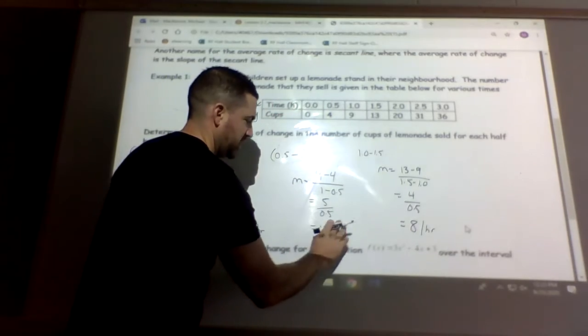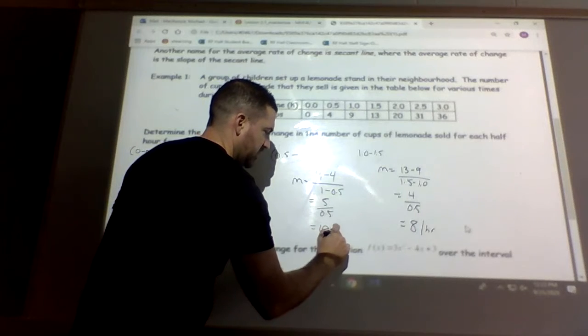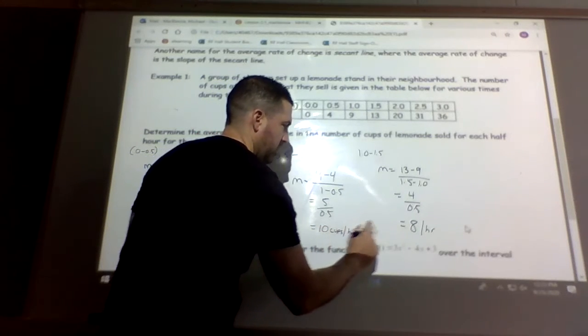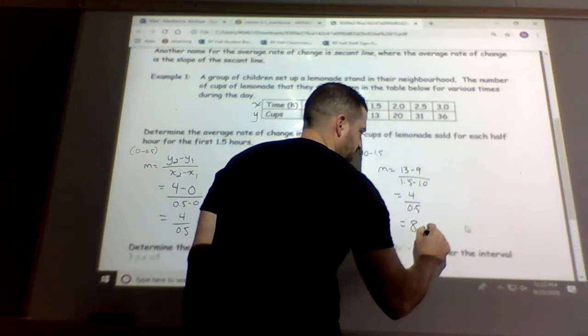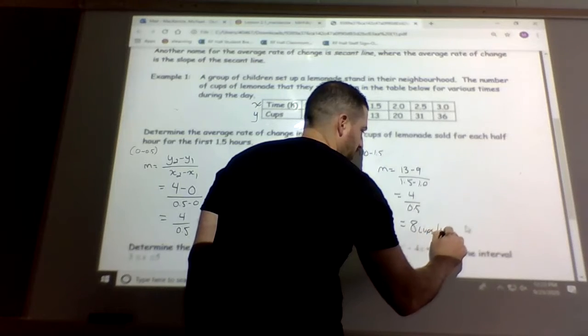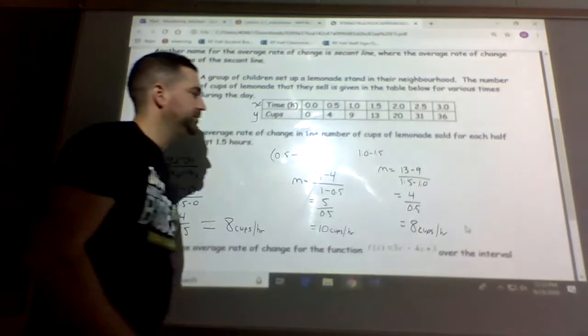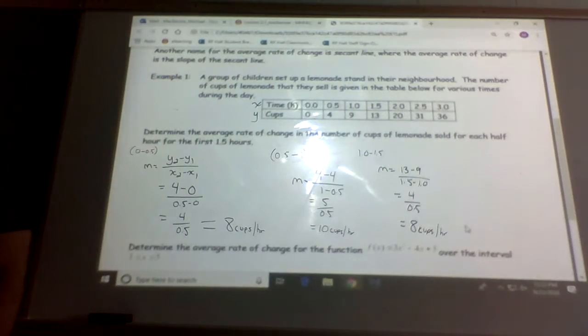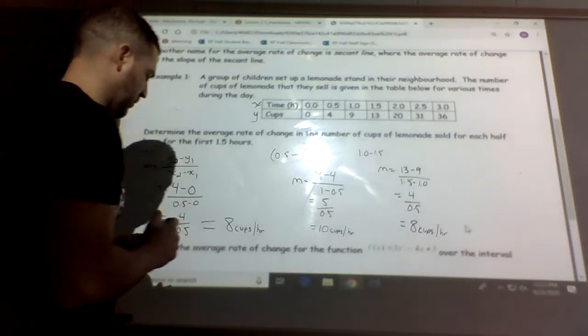Oh, why did I put dollars here? Sorry, not 10 dollars. This is 10 cups per hour, and this is 8 cups per hour. So that would be average rate of change. So that would be the first one.